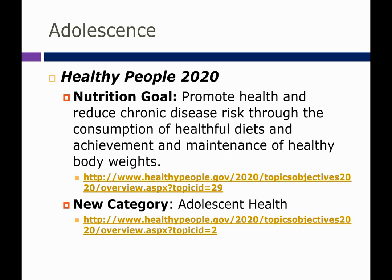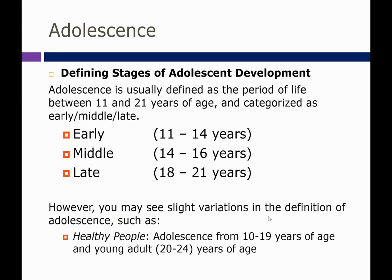Healthy People 2020 has goals for adolescents. Adolescent health was actually a new category that was added, and the goal is to promote health and reduce chronic disease risk through the consumption of healthful diets and achievement and maintenance of healthy body weights. If you would like to learn more, you can visit the Healthy People website.